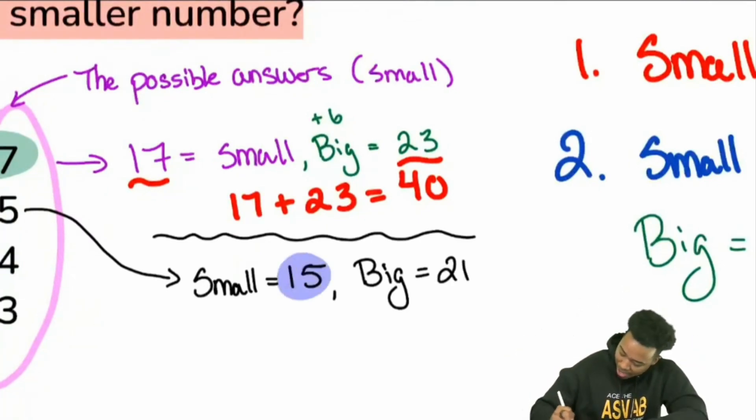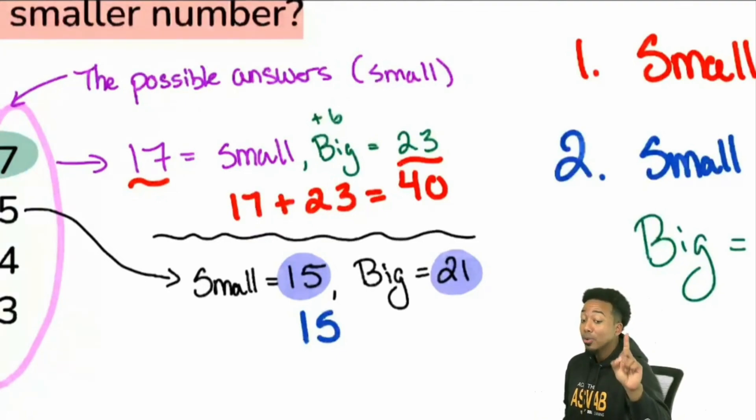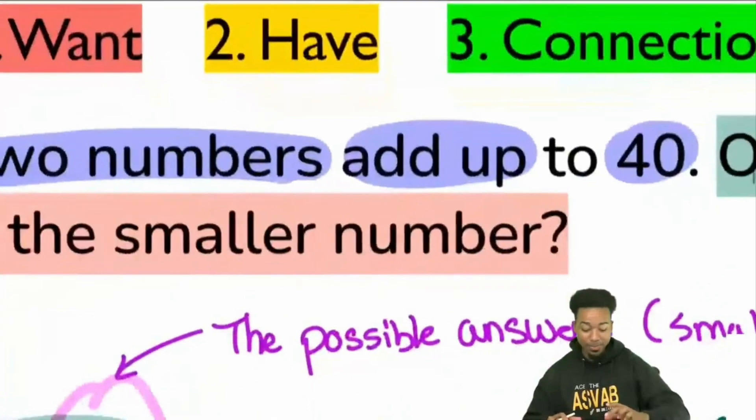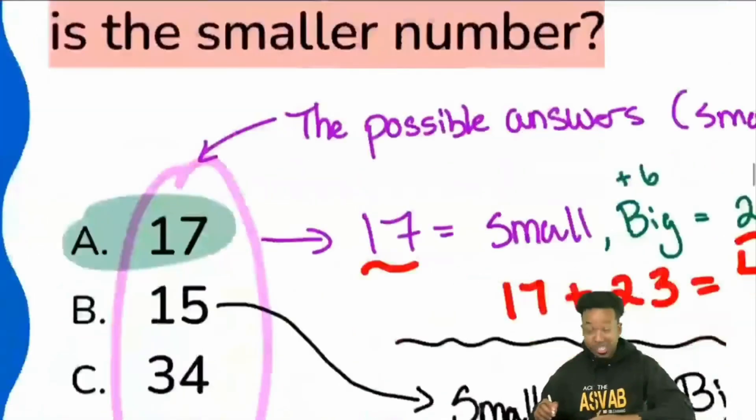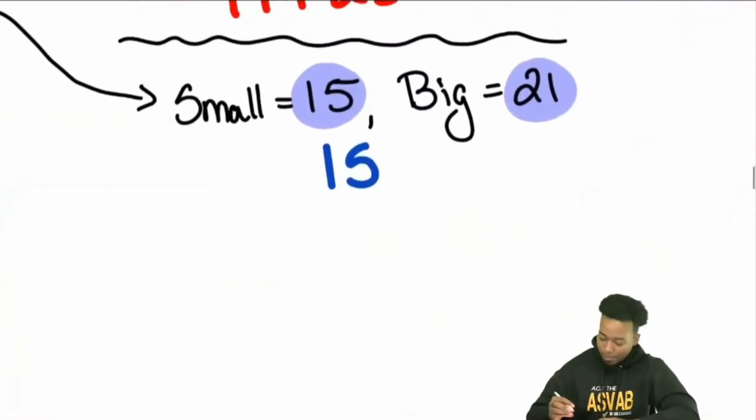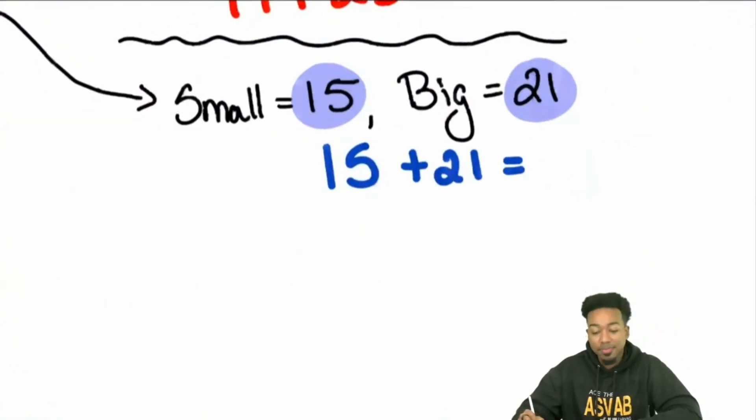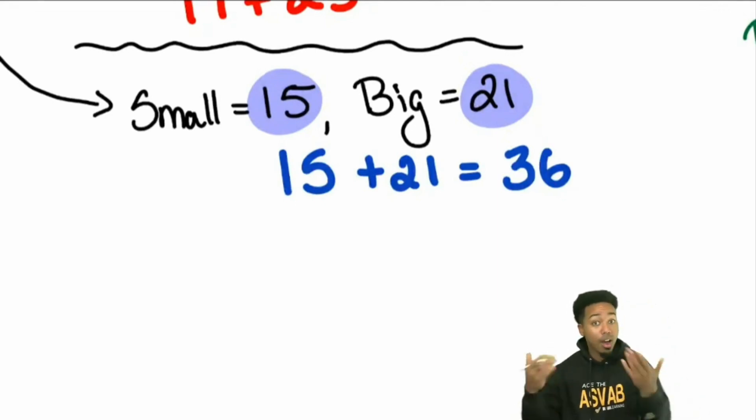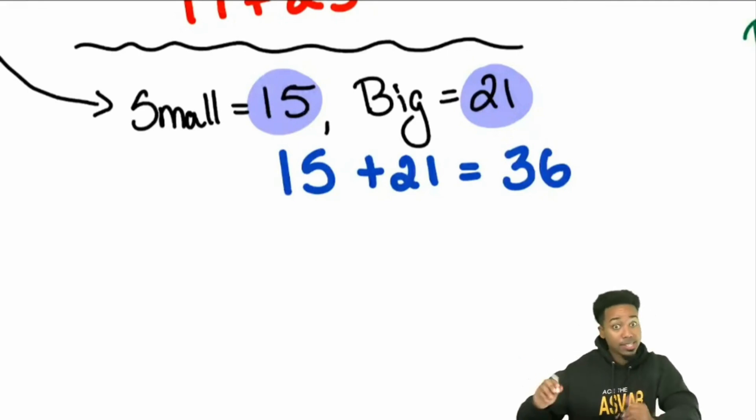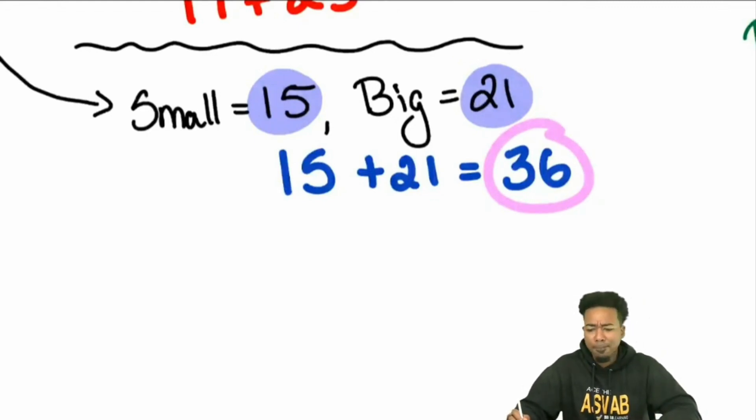So what happens, everybody, if we add 15 and 21 together? Again, it's supposed to add up to what? What is it supposed to add up to? What is it supposed to add up to? 40, right? What does it say, guys, right here, in blue? Two numbers add up to 40. Two numbers add up to 40. Let's see if that's the case here. 15 plus 21. What's that going to be? 36. Is that the correct answer? No, because it doesn't follow the conditions of the problem. The problem says they're supposed to add up to 40. I tested that theory out with the choices, and this one says 36. Everybody, is B the answer? Absolutely not. Absolutely not. Not the answer.